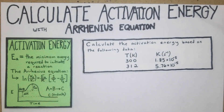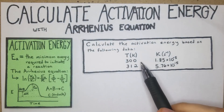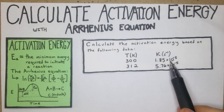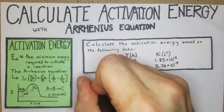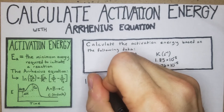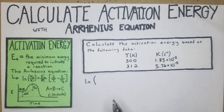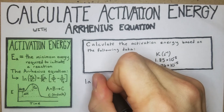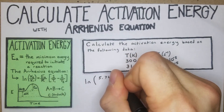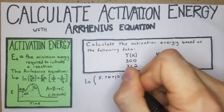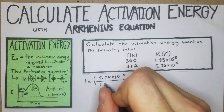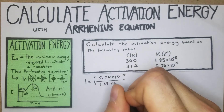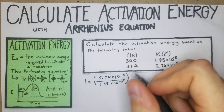Calculate the activation energy based on the following data. We have 300 and 312 Kelvin, and for our K values we have 1.85×10⁻⁵ and 5.76×10⁻⁵. We're going to plug that right into the equation. So the natural log of K2 over K1 — we're going to take 5.76×10⁻⁵ divided by 1.85×10⁻⁵. So you have the natural log of that.